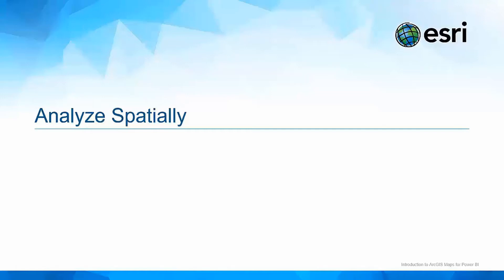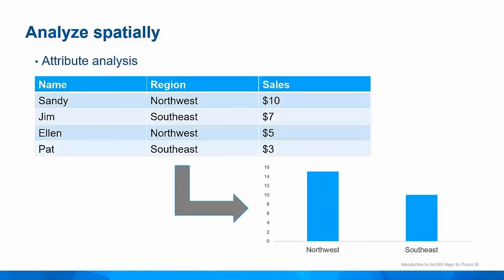Let's learn how to do some spatial analysis. Most BI visuals rely on attributes to link data together for analysis. While this can be very powerful, it has limitations. For example, summarization relies on common values in the attribute table — values like northwest and southeast. Sandy and Ellen can be grouped together to summarize northwest sales, while Jim and Pat can be grouped to show sales for the southeast.